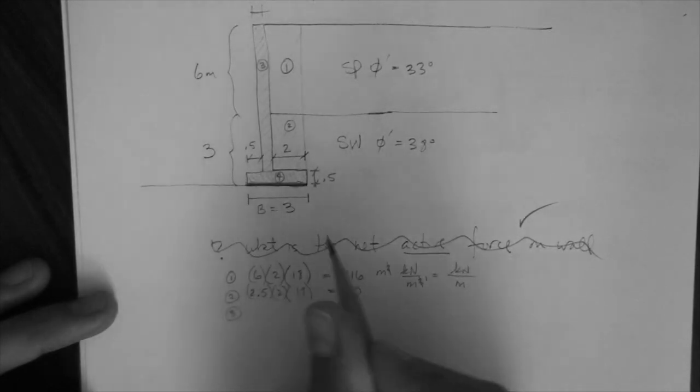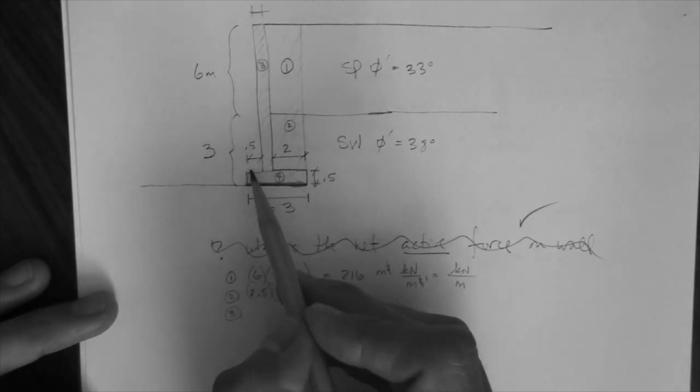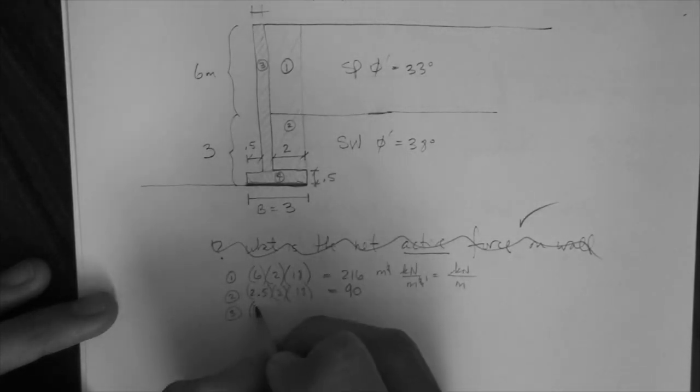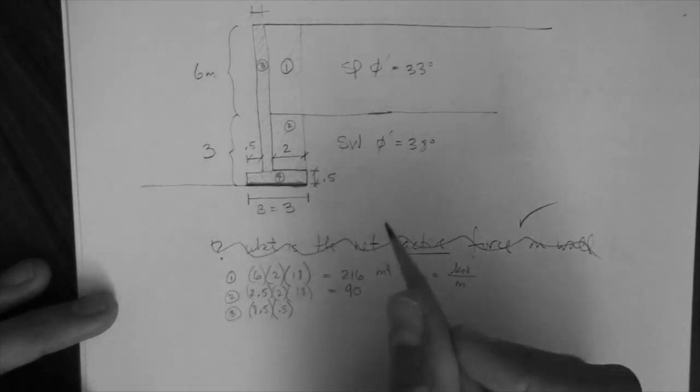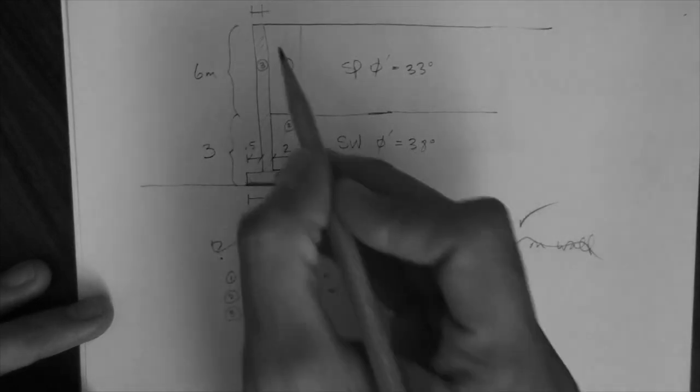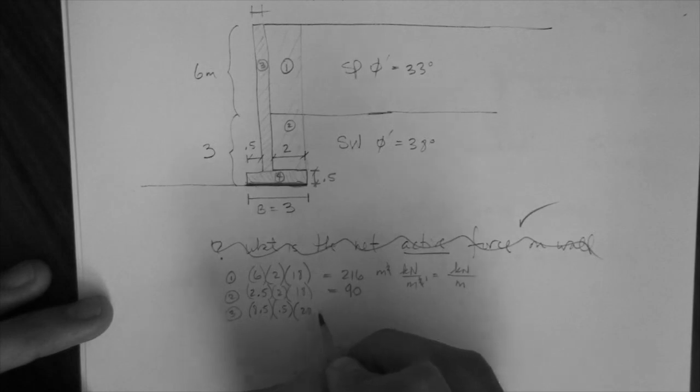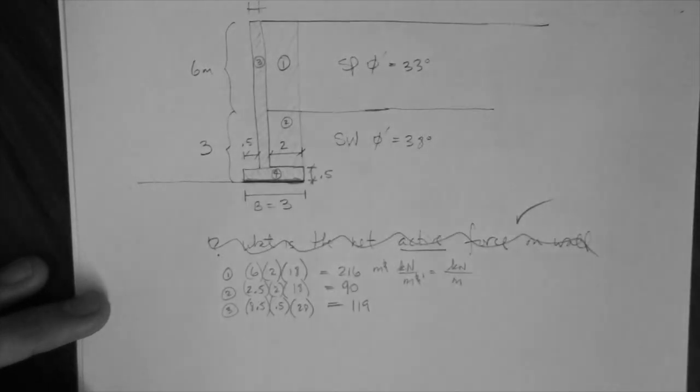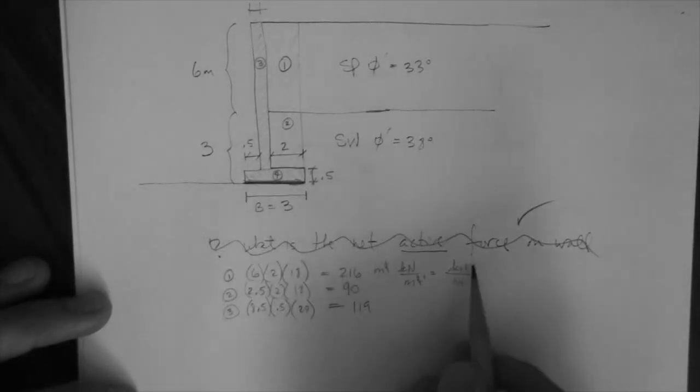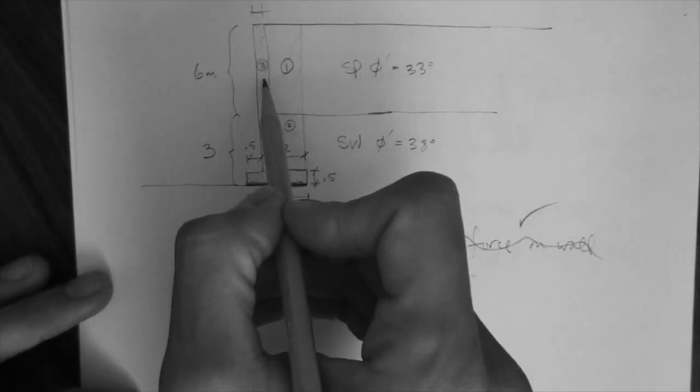Number three. Number three is the stem. The stem is 6 plus 2.5, 8.5 meters, times 0.5 meters in height, or sorry, in thickness, that's the area, and it's made of concrete. So this is 28. So 8.5, 14, 119. 119 kilo newton per meter, per meter of strip footing. Sorry, meter of stem. This is the stem.